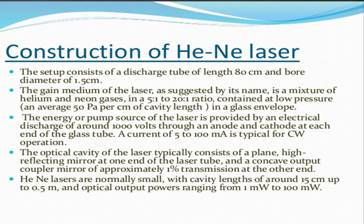The construction of the helium neon laser consists of a discharge tube of length 80 centimeters and bore diameter of 1.5 centimeters. The gain medium, as suggested by its name, is a mixture of helium and neon gases taken in a ratio of 5:1 to 20:1, contained at low pressure in a glass envelope. The pump source is provided by electrical discharge of around 1000 volts through an anode and cathode at each end of the glass tube.